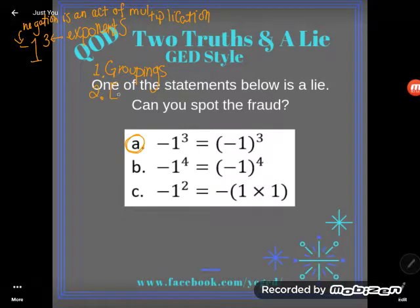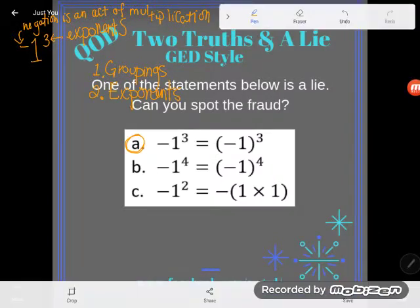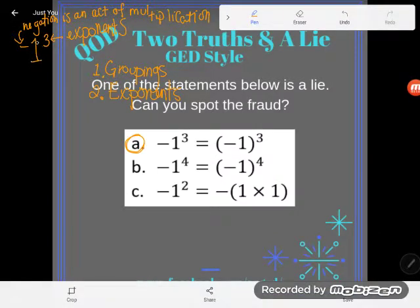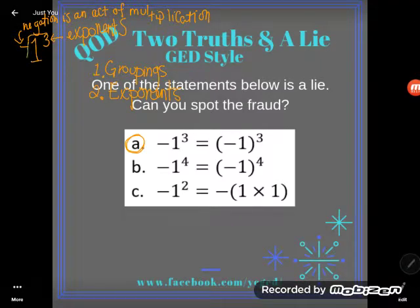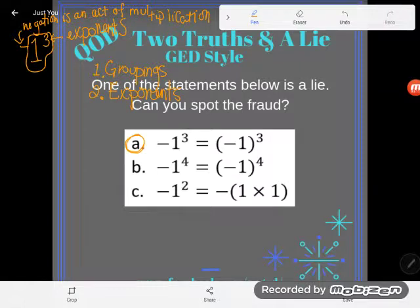But the second step of the order of operations is to do exponents. So I need to tackle my exponent next. Take a look at what I'm going to do. I am just going to circle the one and the three. That exponent is weak. It only works on the number. It does not touch that negative sign.